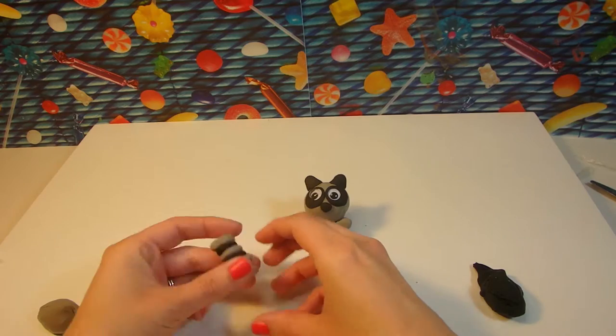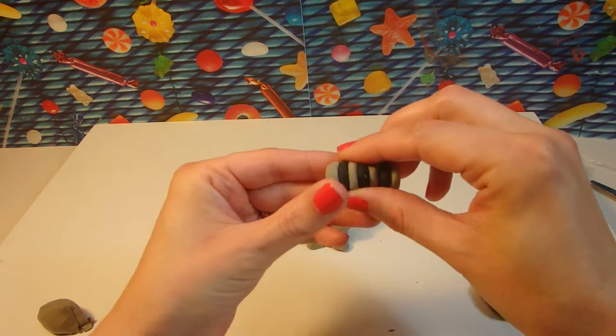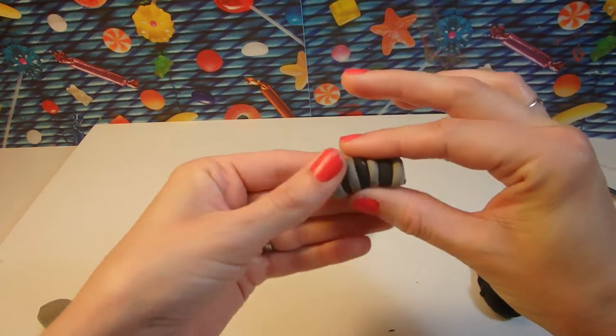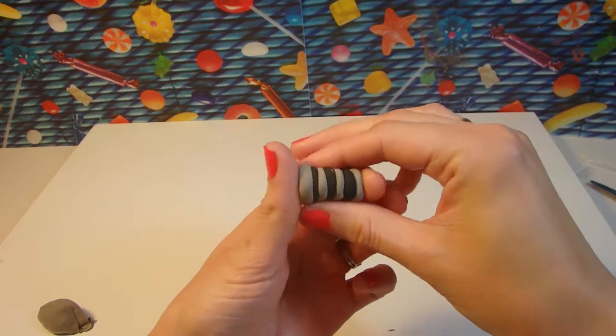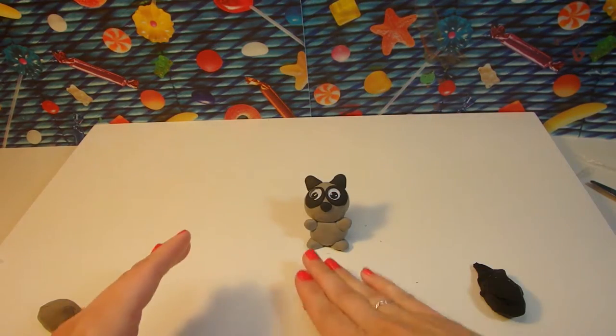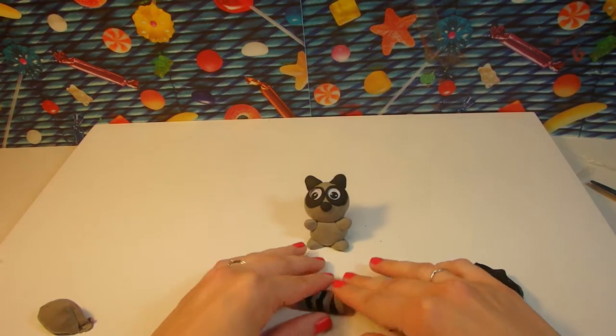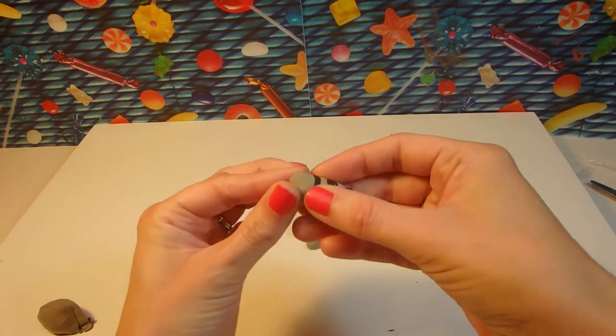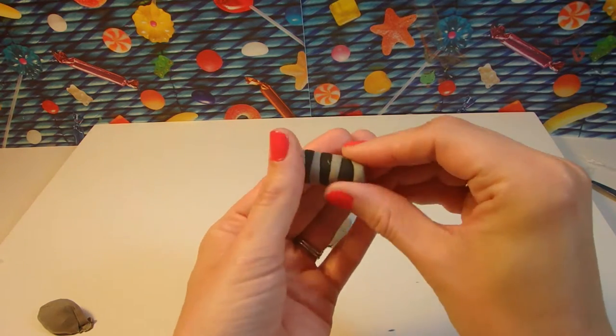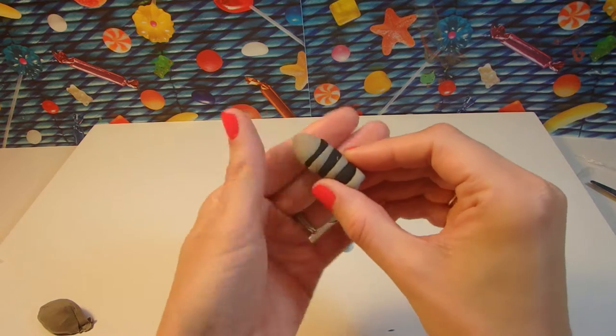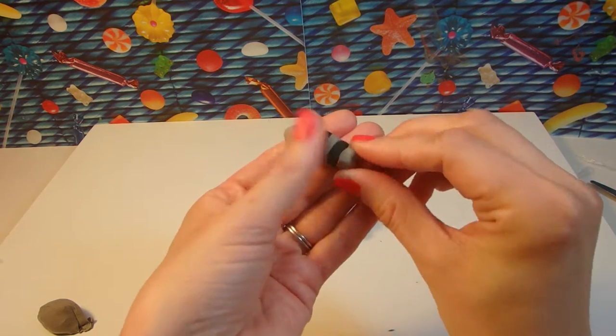So we have this big, funny stack of grey and black clay. So we're going to kind of squish it together. Roll it out a little bit. This is going to be our raccoon's bushy, stripy tail. There we go.